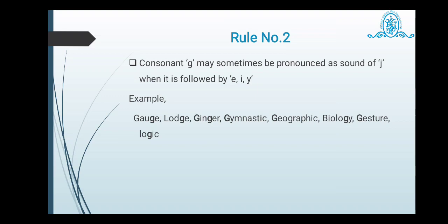Now rule number two. Consonant G may sometimes be pronounced as a sound of J as it is followed by E, I, Y. If G is followed by E, I, Y, then it is pronounced as J. Be careful. Gauge, followed by E. Lodge, followed by E. Ginger, followed by I. Gymnastic, followed by Y. Geographic, followed by E. Biology, followed by Y. Gesture, followed by E. Many of the times we commit mistake whether I have to pronounce this word as gesture or gesture. But mind this, it should be gesture because it is followed by E. Logic, followed by I.